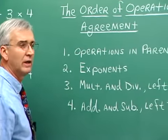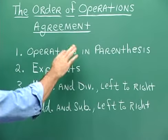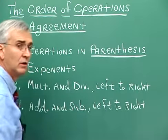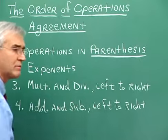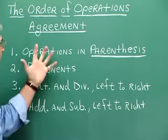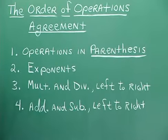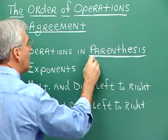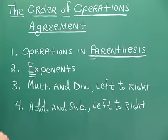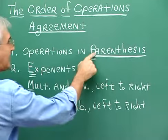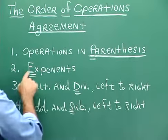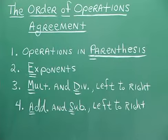How can you remember all of this? There are techniques to remember the order of operations agreement. Parentheses means do me first — your attention goes directly to wherever the parentheses may be in the problem. There's also another technique that's been around for a long time: consider P for parentheses, E for exponents, M for multiplication, D for division, A for addition, and S for subtraction. Please Excuse My Dear Aunt Sally — it gives you a way to remember the order of operations.